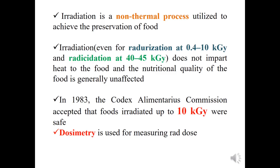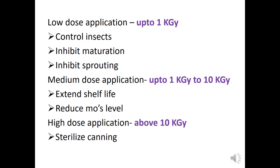The unit for measuring radiation dose is the gray, and the instrument used for measuring radiation dose is the dosimeter. The irradiation dose can be categorized into three types: low dose application (up to 1 kilogray) to extend shelf life and reduce microorganism levels; medium dose application (1 to 10 kilogray) to kill microorganisms and extend shelf life; and high dose application (above 10 kilogray) for sterilization.